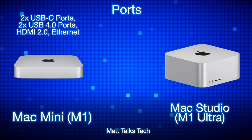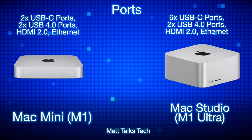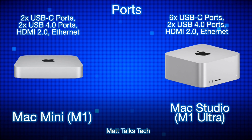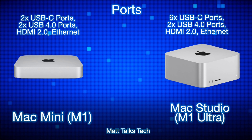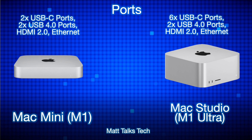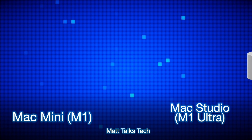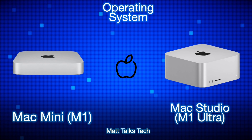For ports, the Mac Mini M1 has two USB-C ports, two USB-A ports, HDMI 2.0, and an Ethernet port on the rear. The Mac Studio has six USB-C ports — four on the back and two on the front — plus two USB-A ports, HDMI 2, and an Ethernet port. Both models come with macOS Monterey out of the box.